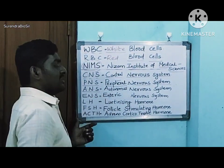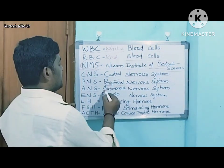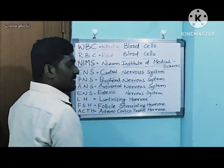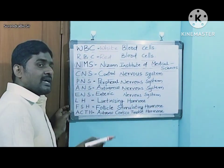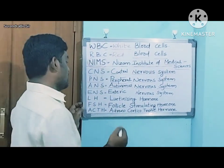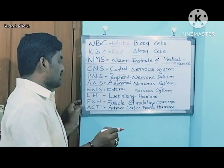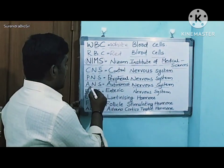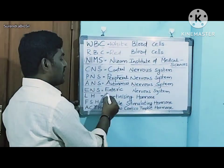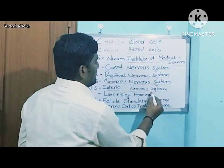Next: ANS — Autonomous Nervous System. In the Autonomous Nervous System we can see sympathetic and parasympathetic nerves. Also, ENS — Enteric Nervous System.